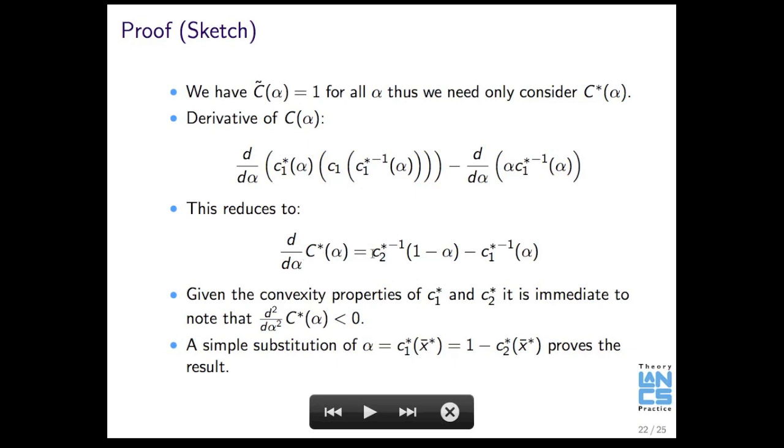A little bit of work, that reduces to this expression here, and you can immediately see that if we differentiate that a second time, it will be negative, so we have a graph that's just going down all the time, and there's a single point at which this equates to zero, and simply substituting that in gives the result. So that's quite nice.